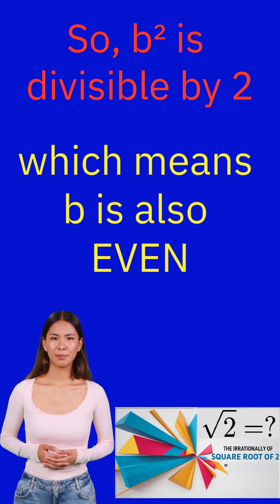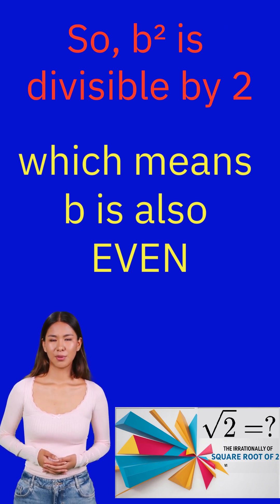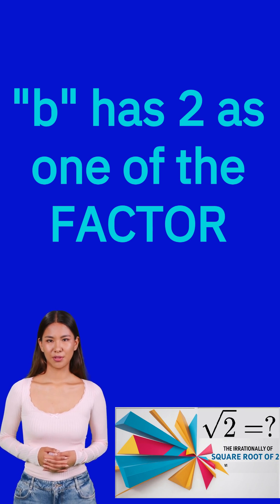Which means that b² and b both are even, and b has 2 as one of the factors. Now we know that b also has 2 as one of the factors.